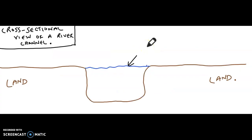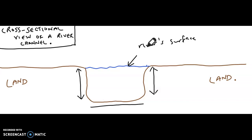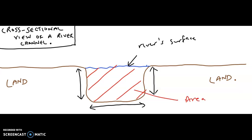This arrow points at the river's surface. These are the sides of the river. We have the depth and we could also be focusing on the width of the river channel. This area shaded in red is the cross-sectional area.